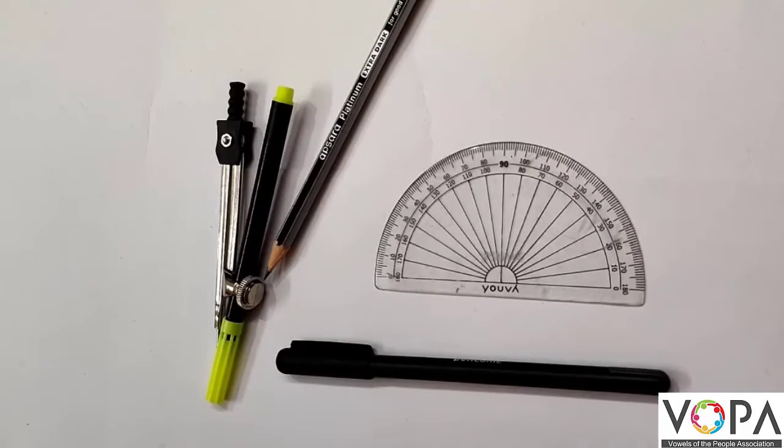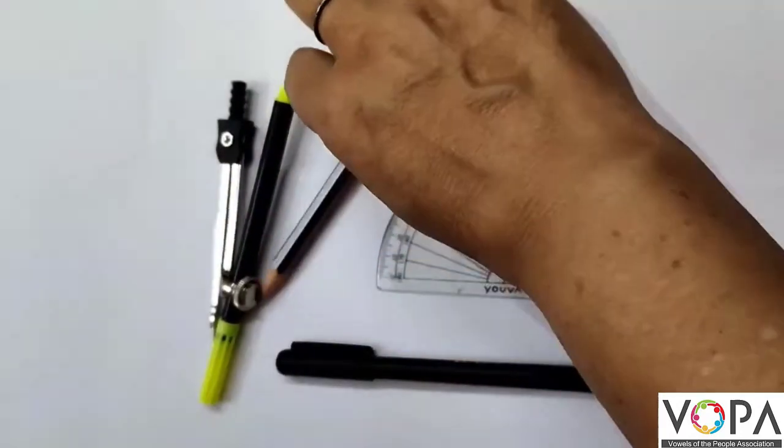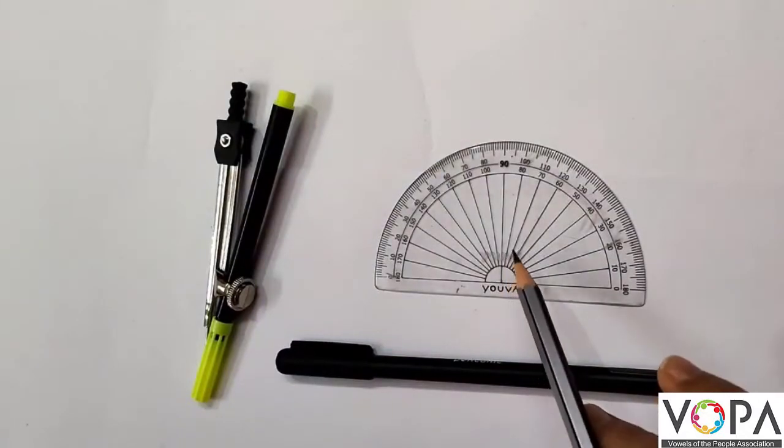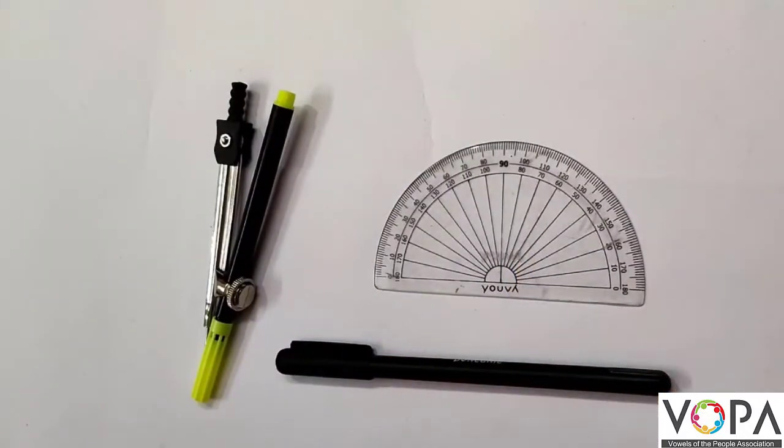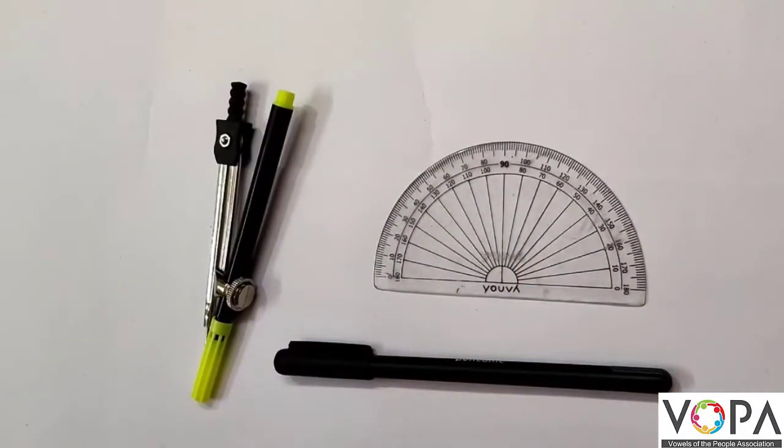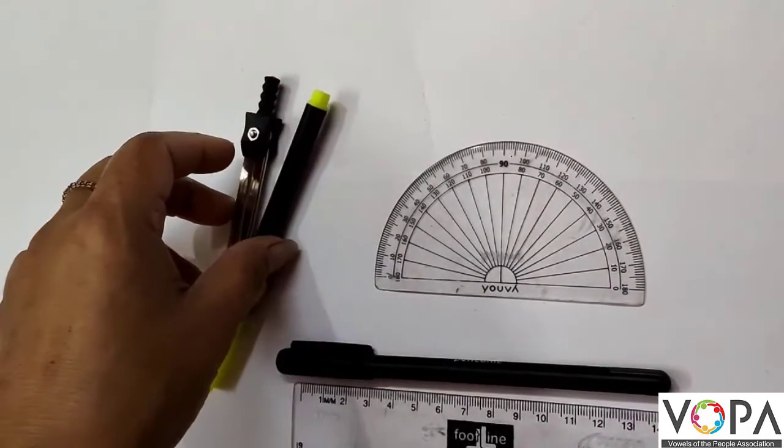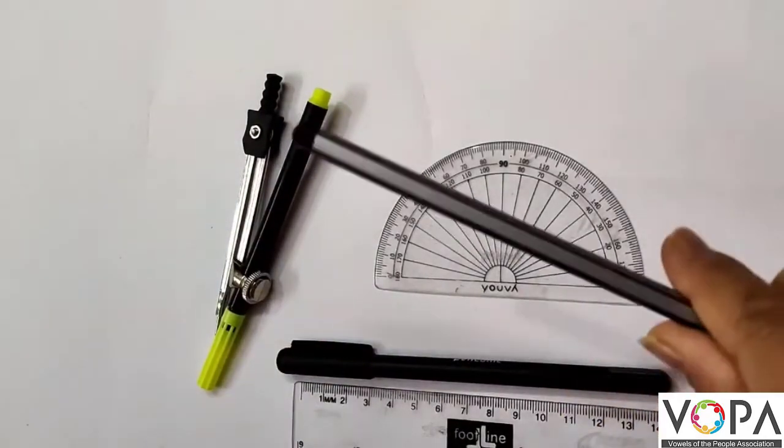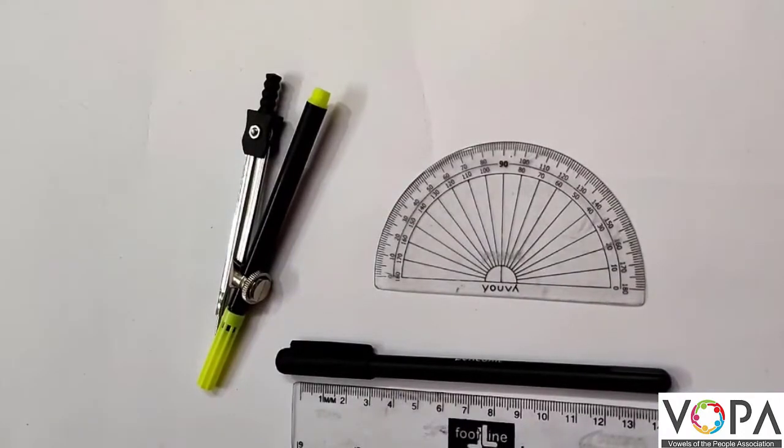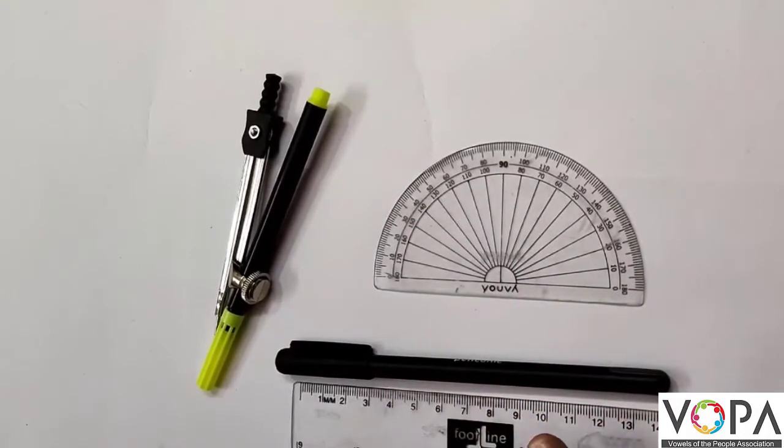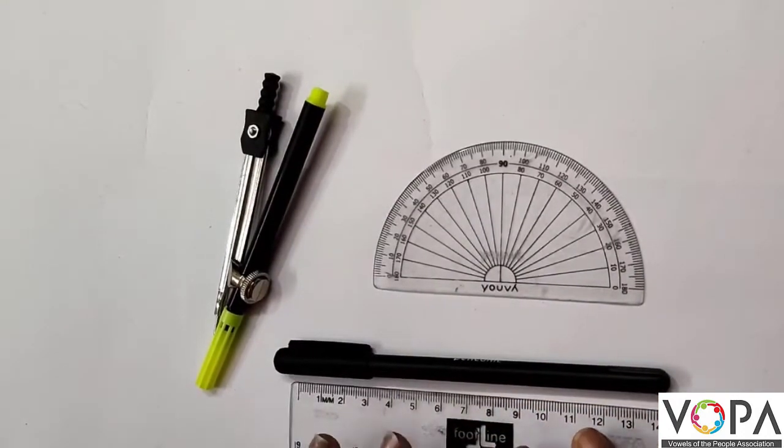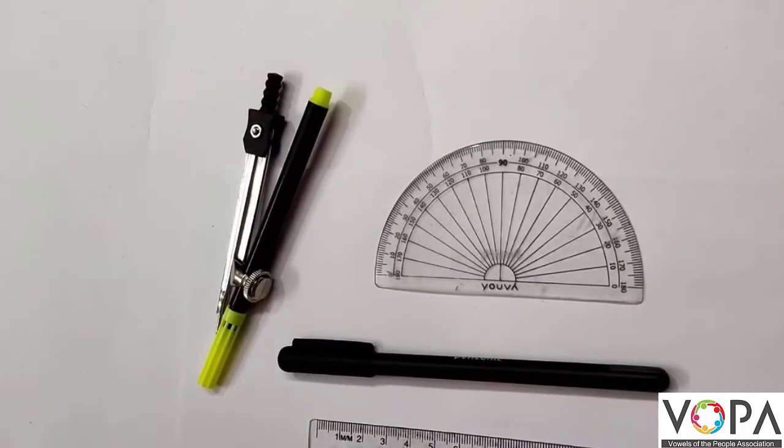To draw a circumcircle of the given measures, we need a protractor, a scale, a compass, a pencil, and an eraser. I kept a pen here so I will be showing you with a pen so the lines are dark enough for you.